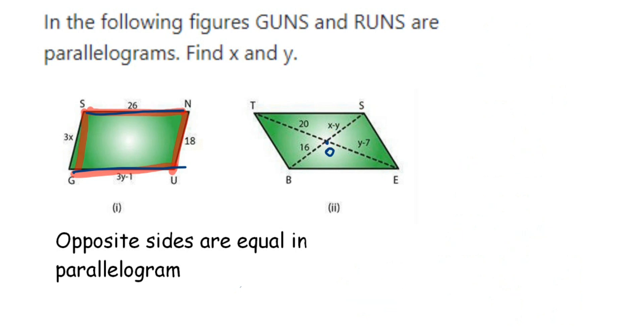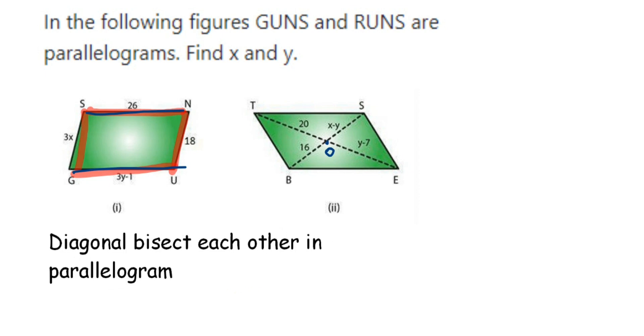Diagonals bisect each other in a parallelogram. This property we're going to use to solve the second question. As I said before, I have to first find out the value of y because we need to use this to find the other one. Here TO will be equal to OE.